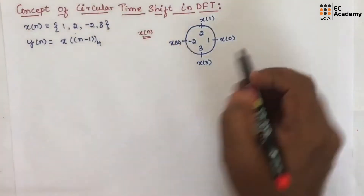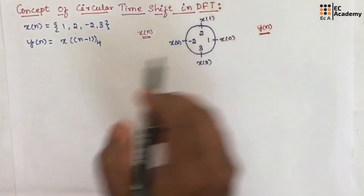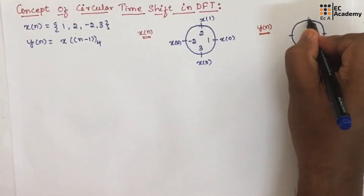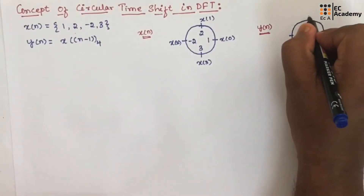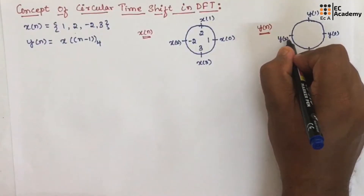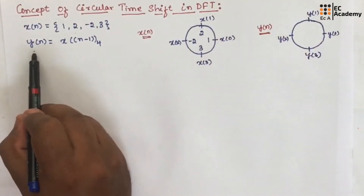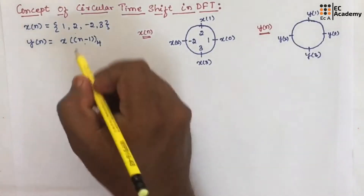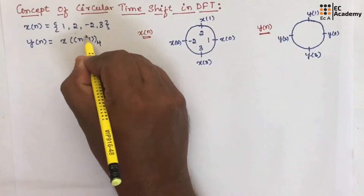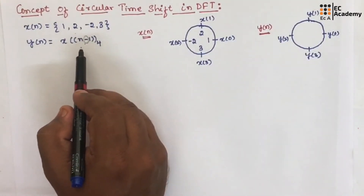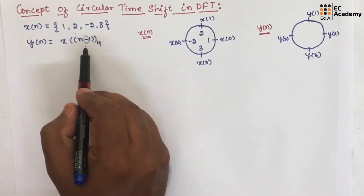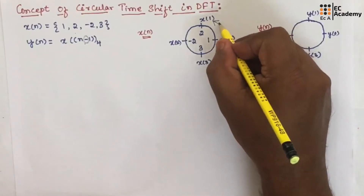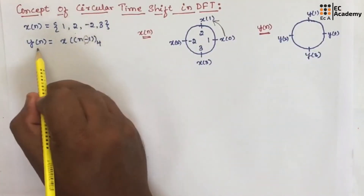Now let us represent y of n using a unit circle. Let us take a circle and divide it into 4 parts. Let us write y of 0, y of 1, y of 2, y of 3. To find this sequence y of n, since we have a circular shift by 1 position and here we are having a negative sign, we need to rotate x of n in the anti-clockwise direction by 1 step to get the sequence y of n.